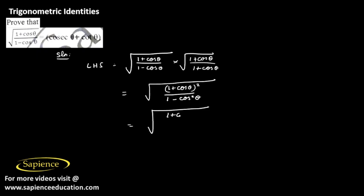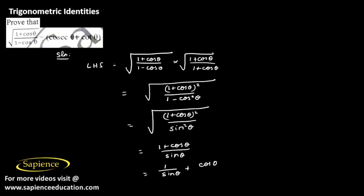Since 1 minus cos squared theta equals sine squared theta, we get (1 plus cos theta) whole square divided by sine squared theta. Taking the square root, the left hand side becomes (1 plus cos theta) divided by sine theta. Writing the denominator individually for each term, we get 1 by sine theta plus cos theta by sine theta.